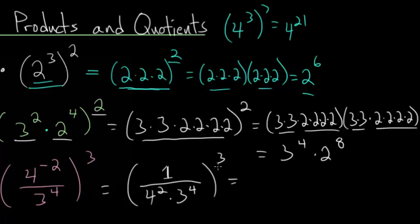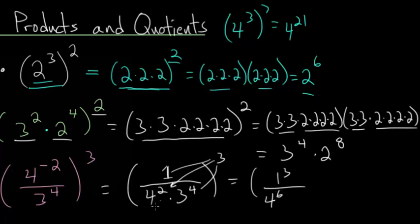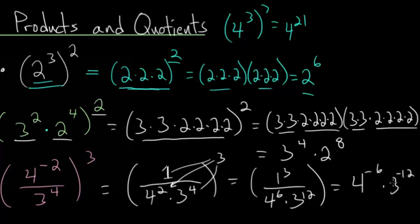This cube is going to distribute to all of these factors. What we get is 1 cubed divided by 4 squared cubed, which is 4 to the 6th — we're just multiplying those exponents. And 3 to the fourth cubed would be 3 to the twelfth. We can rewrite 1 cubed as just 1. If we want, we can also put them in the numerator with negative exponents, so this becomes 4 to the minus 6 times 3 to the minus 12 — because a positive exponent in the denominator becomes negative in the numerator, and vice versa.